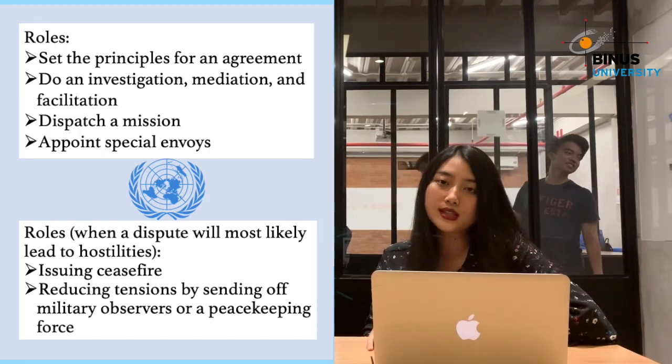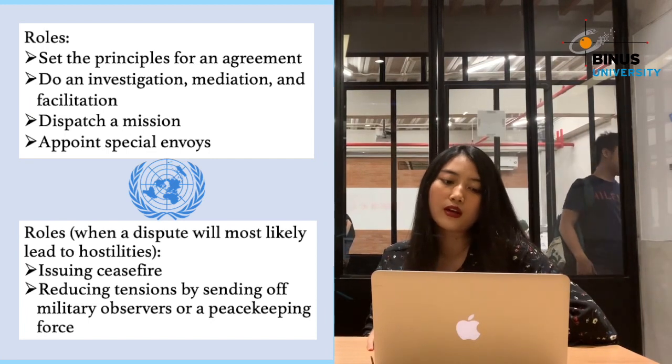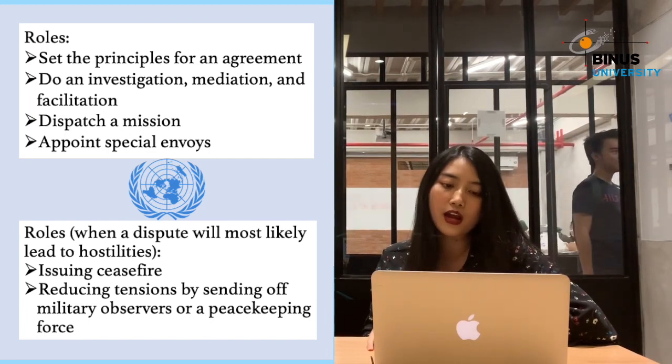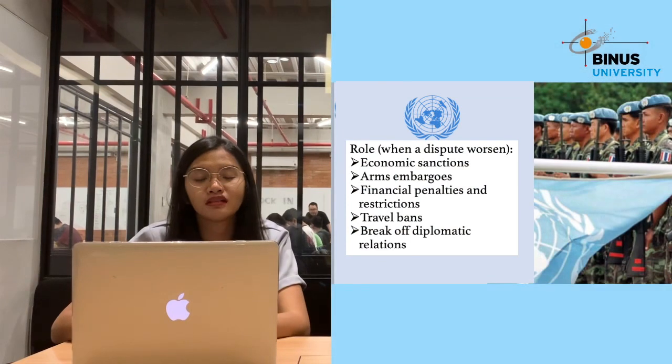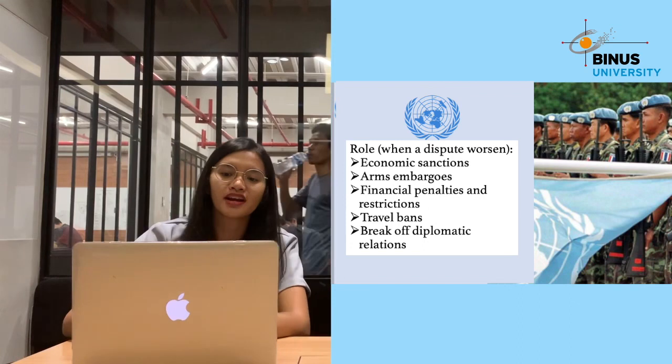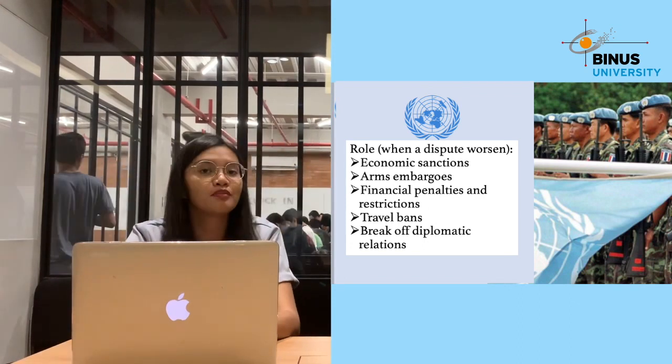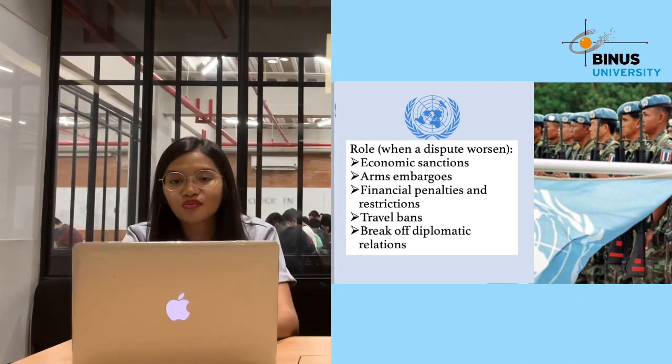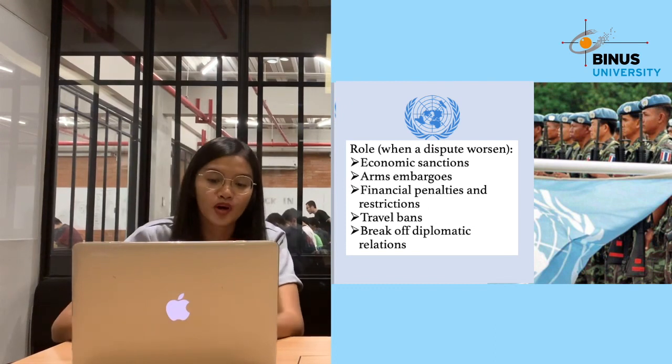If a dispute is likely to lead to hostilities, the council will take fast actions by issuing a ceasefire and reducing tensions by sending military observers and a peacekeeping force. If the situation becomes worse, the council may carry out economic sanctions, arms embargoes, financial penalties, travel restrictions, and severing diplomatic relations. Regardless of what action is taken, they will try to minimize the impact of the dispute for the international community in areas such as the global economy.